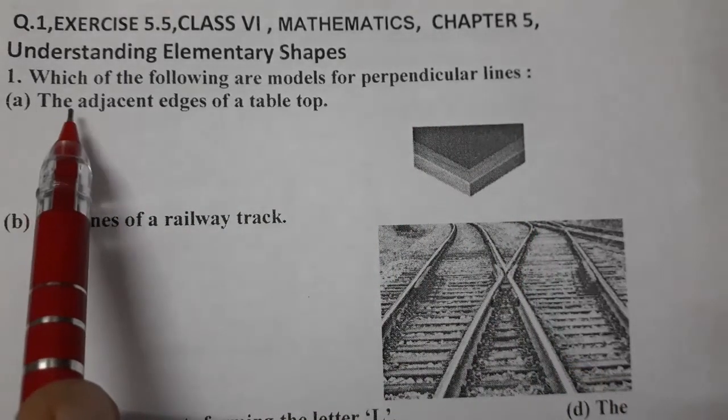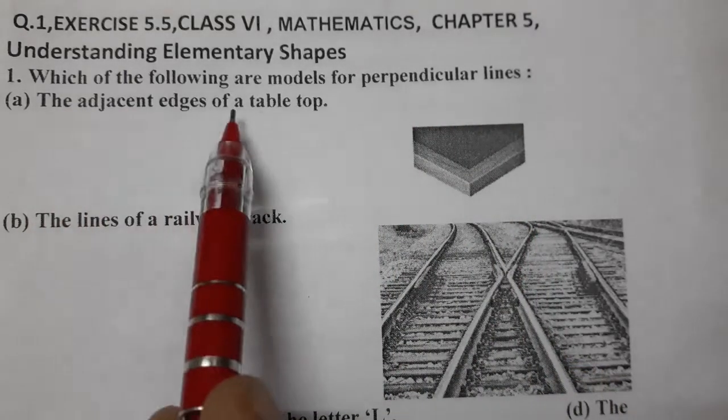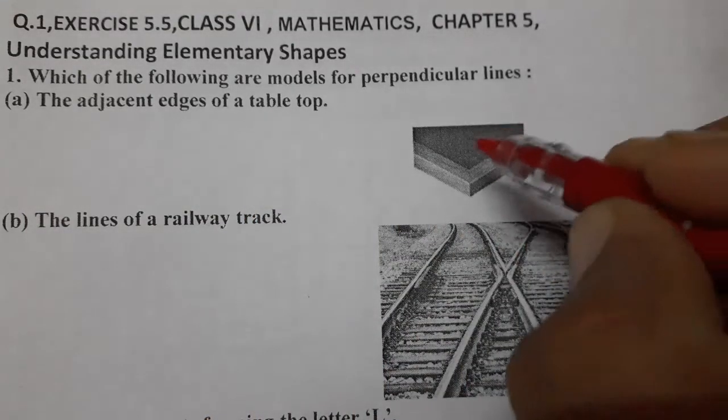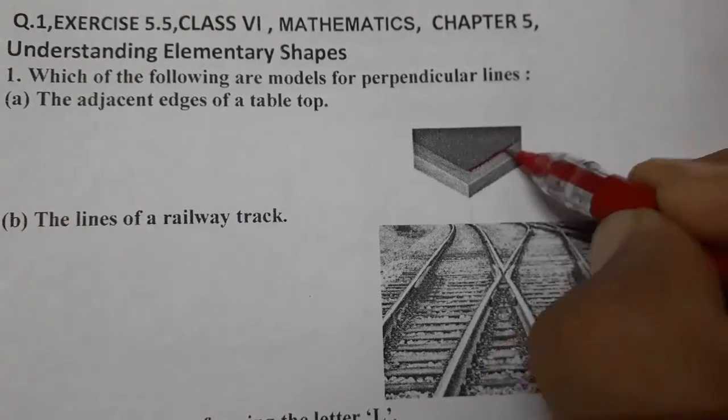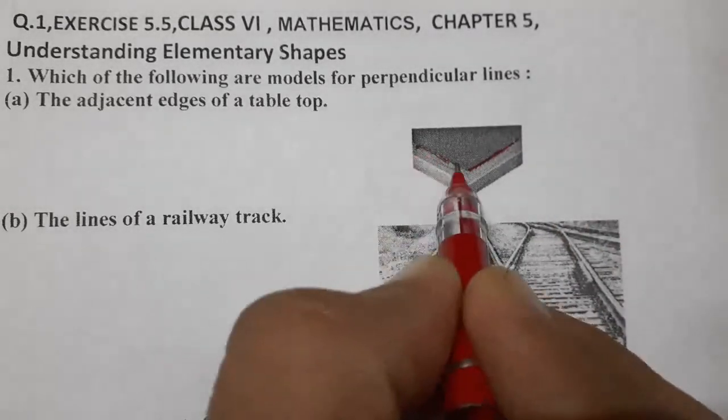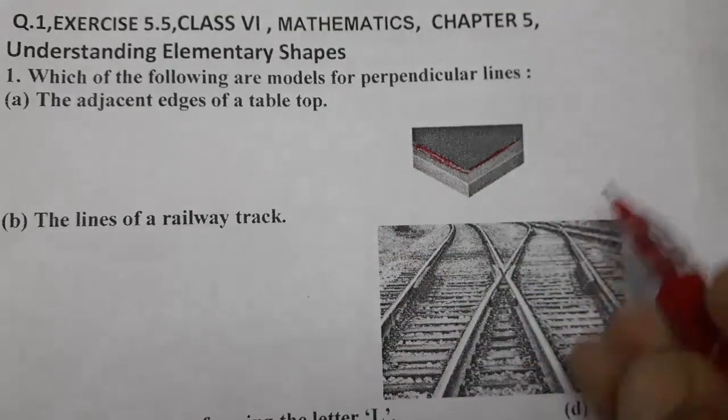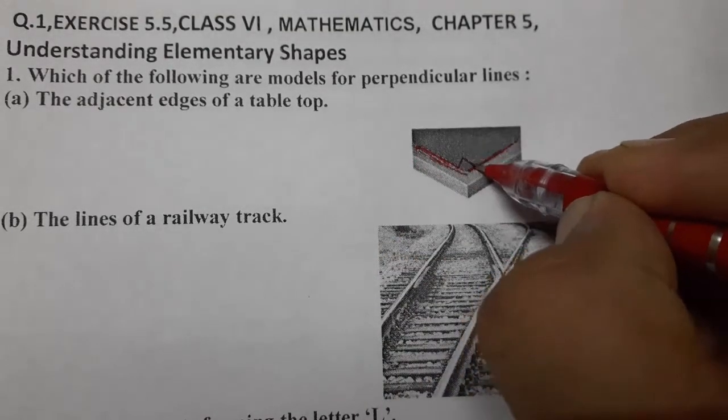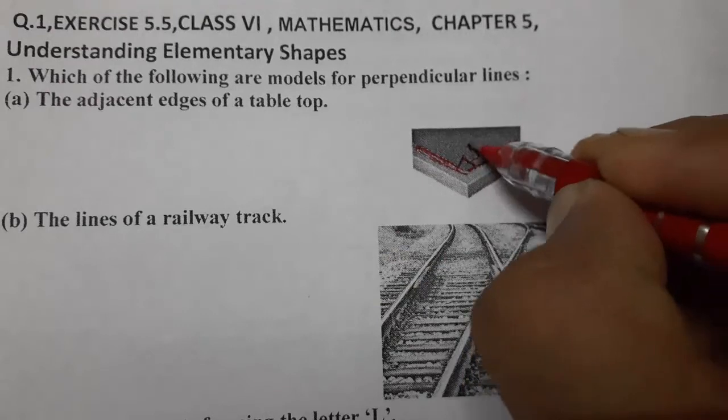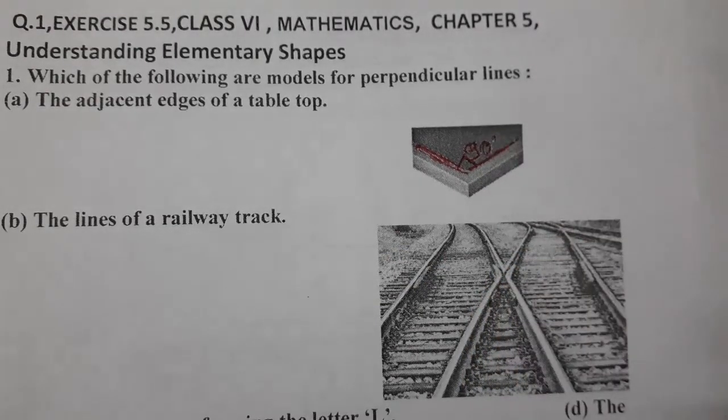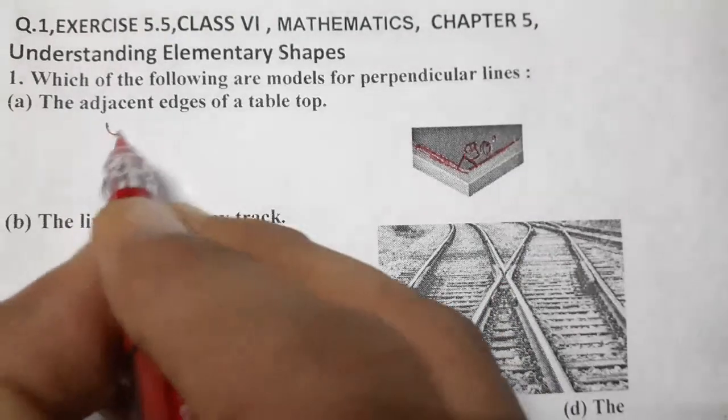So see first one, the adjacent edges of table top. So this is the table top, this is the adjacent one, this one and this. These two are the sides or edges of table top and this is making an angle of how much? 90 degrees. So we will write yes. First one, yes.